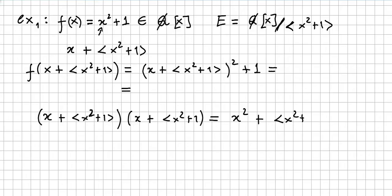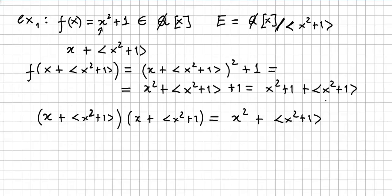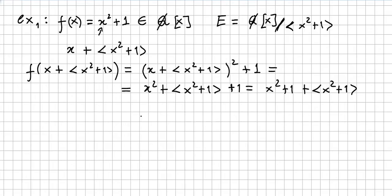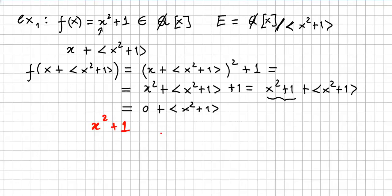So we get x squared plus x squared plus 1, and plus 1, which gives us x squared plus 1 plus x squared plus 1. This is 0, since x squared plus 1 is in the ideal. So x squared plus 1 equals 0 in this field.